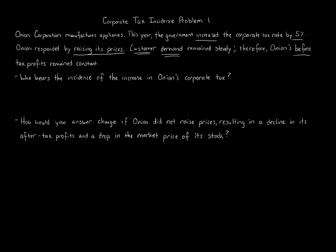So who bears the incidence? Incidence means ultimately who bears the cost of this tax. Onion Corporation files as a C corporation, so the corporation pays tax and then shareholders pay tax on distributions. The owners pay through the corporation and through the market price of the stock — but who bears the incidence in the end?